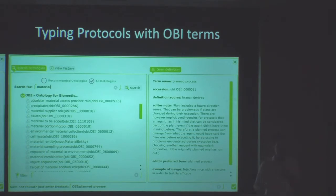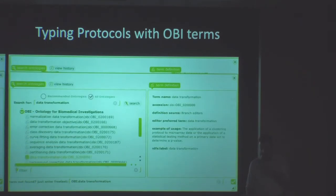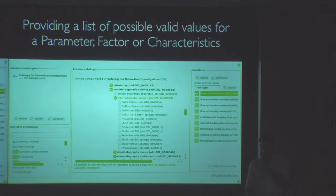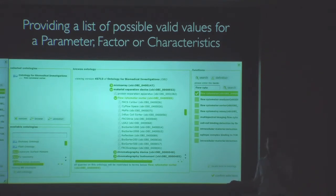For instance, we can detect cases where people have set up a protocol that is not the data transformation it should be. This configuration is available for any of the fields shown earlier. Here, showing examples for OBI, you can see in this panel that we access all the ontologies served by the NCBO BioPortal.